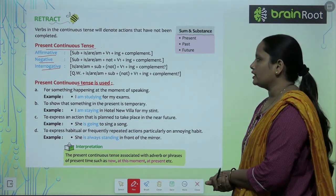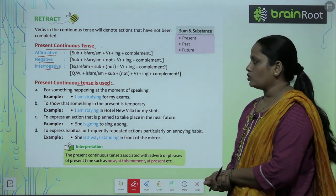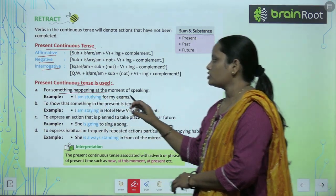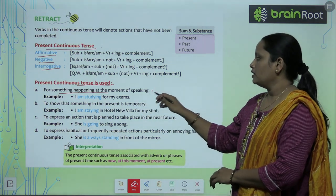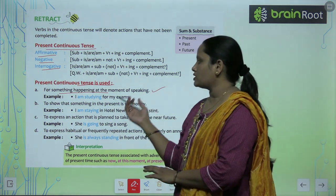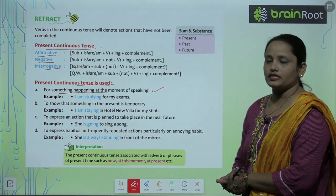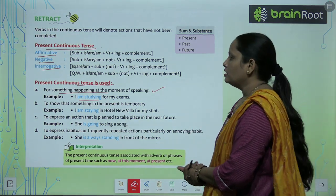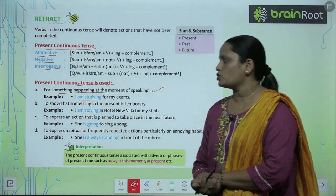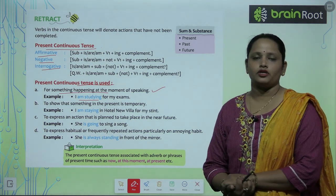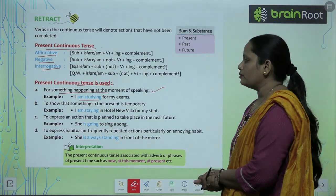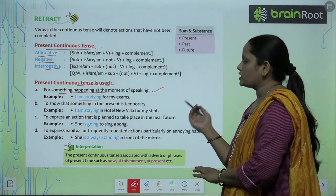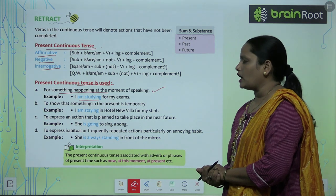Present Continuous Tense is used in the following situations. First, for something happening at the moment of speaking — for example, 'I am studying for my exams.' Second, to show that something in the present is temporary — for example, 'I am staying in Hotel New Villa for my visit.'